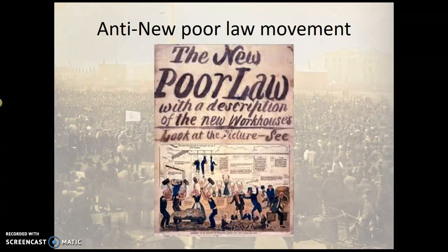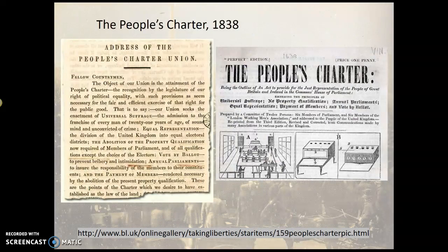Some of the middle classes and a large number of working classes who had previously campaigned for the vote were very dissatisfied with the 1832 Reform Act. The other measure the working classes were dissatisfied with was the new Poor Law of 1834, rolled out across the country from 1834 and particularly in the north of England from 1837 onwards. There was huge discontent, and societies and associations were set up to campaign against the new Poor Law, very grounded in industrial districts that feared the new workhouses and the punitive regime.